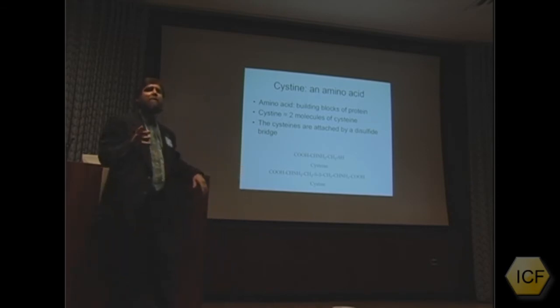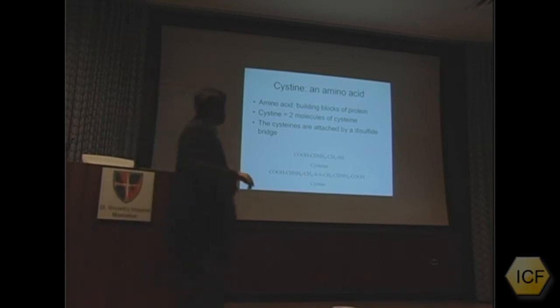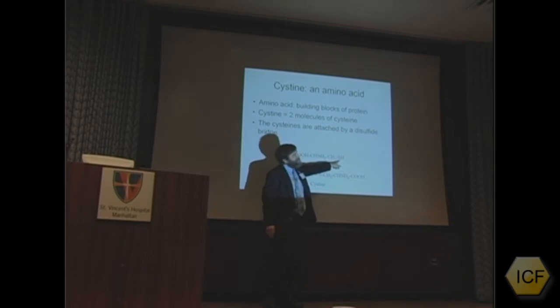Cystine consists of two molecules of cysteine, and the cysteines are attached by a disulfide bridge, two sulfurs. So here is cysteine, and you can see that at the end of it, it has this S for sulfa.